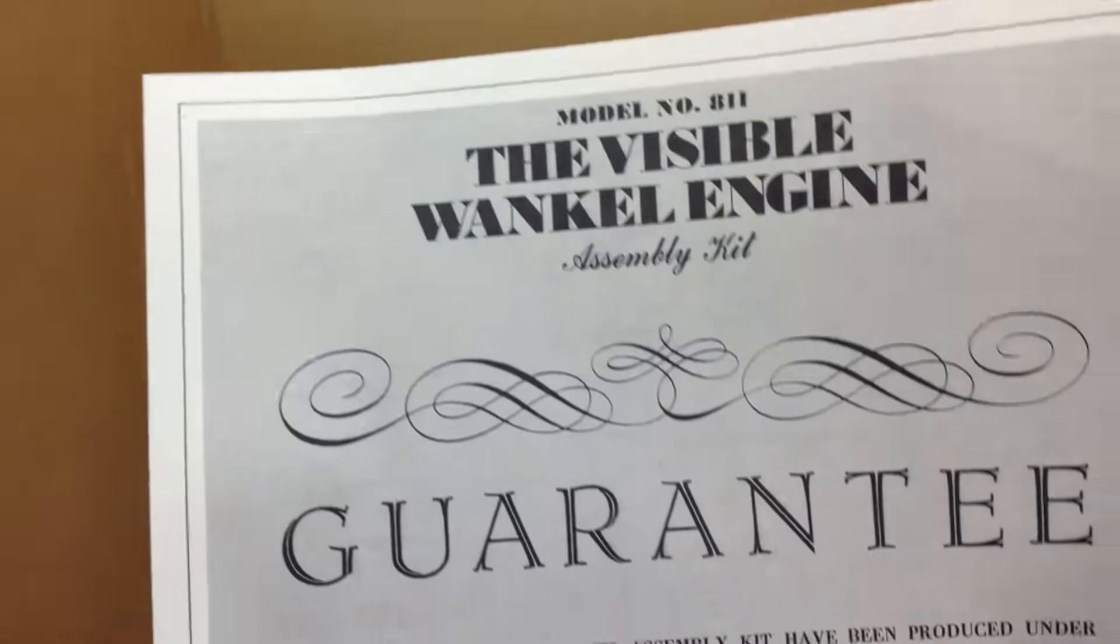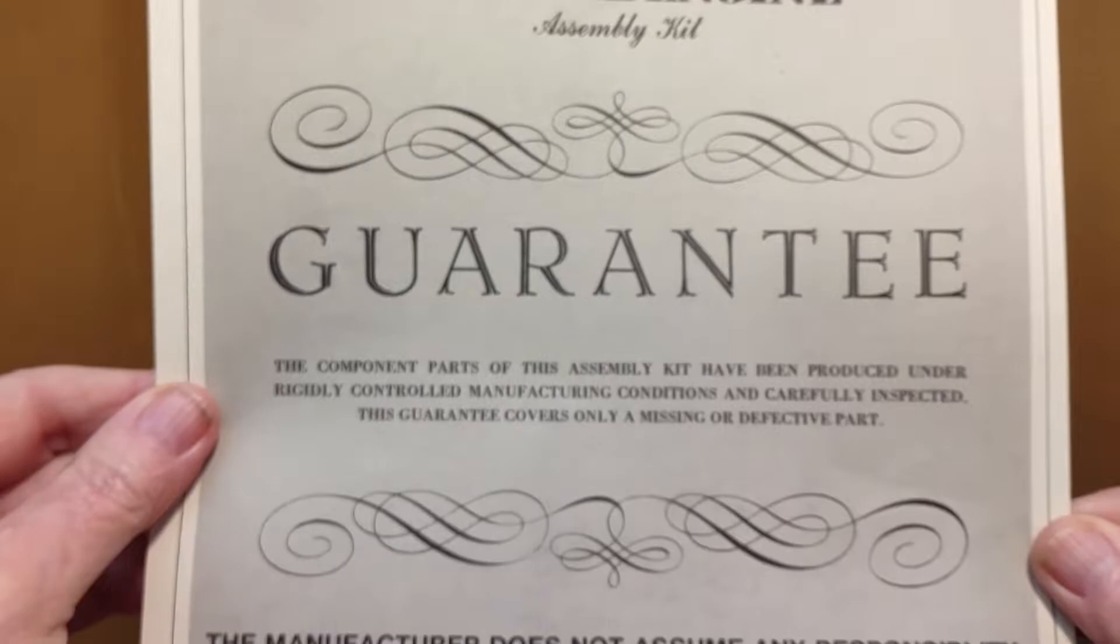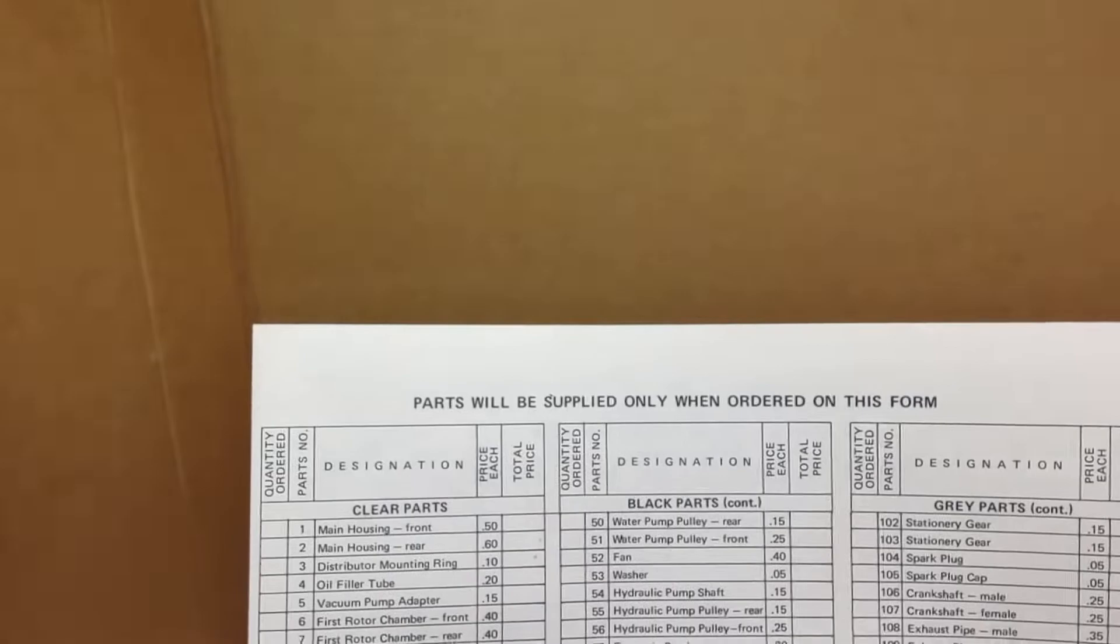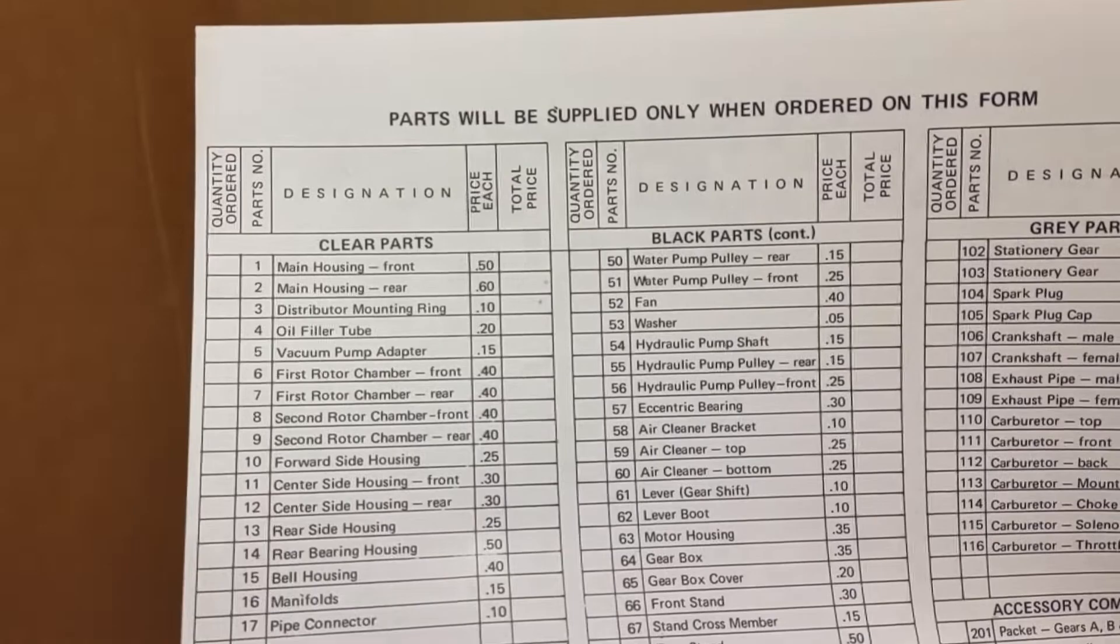That's something else interesting in here, the guarantee. I guess it's guaranteed to be a model of a Wankel engine. On the other side, it's got the parts list and the price of a part. The other interesting thing it's got here is a correction to bring the instructions up to date.